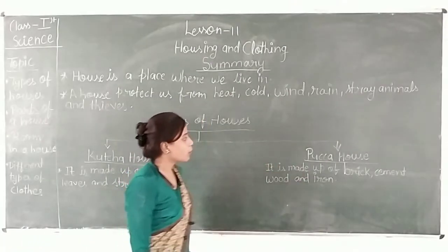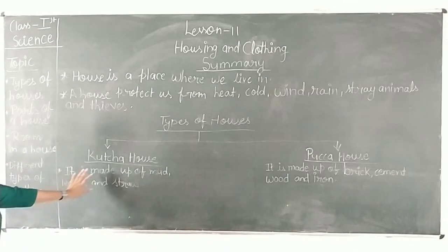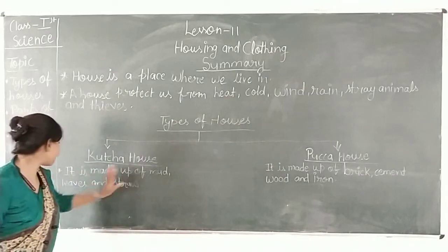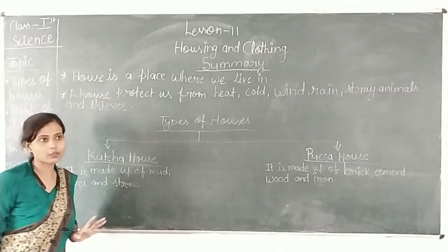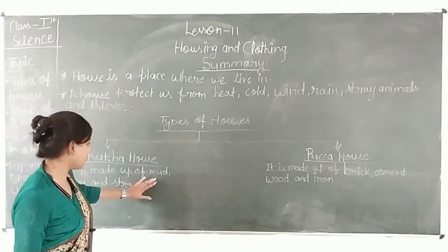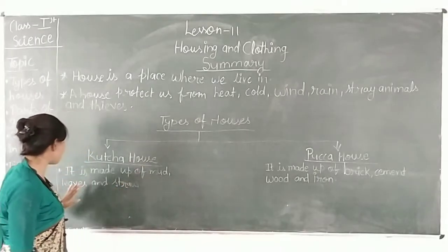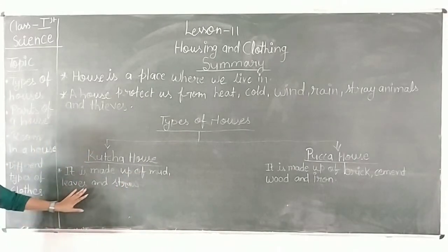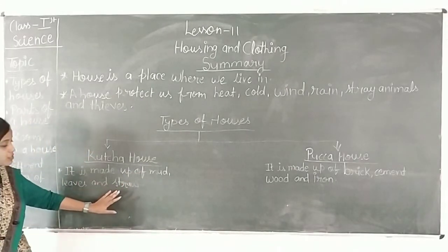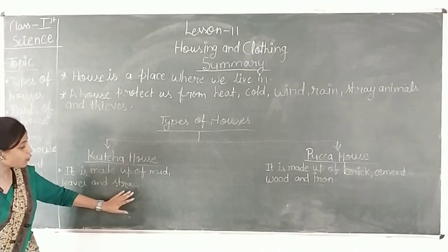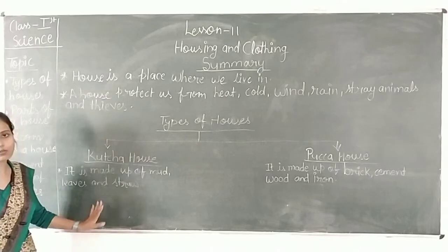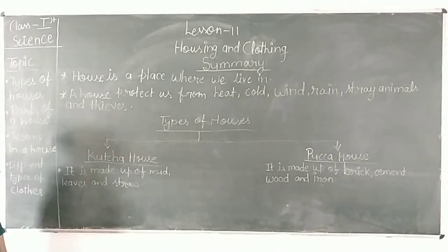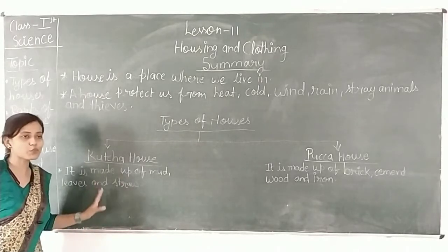What is a kachha house? It is made up of mud, leaves, branches, and straw. A house which is made up of mud, leaves, branches, and straw is called a kachha house. A kachha house is very small.